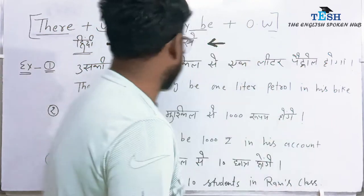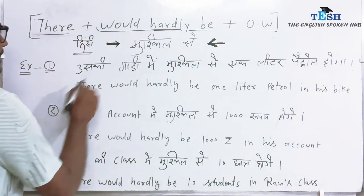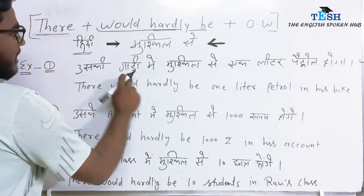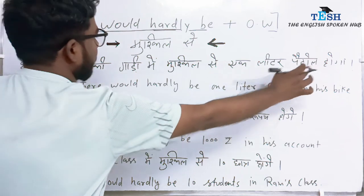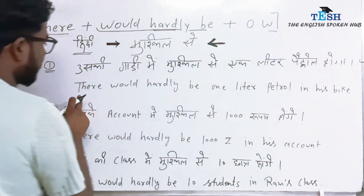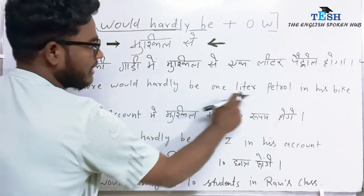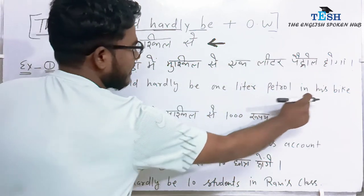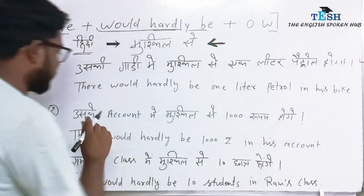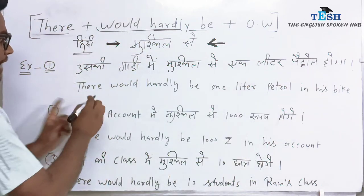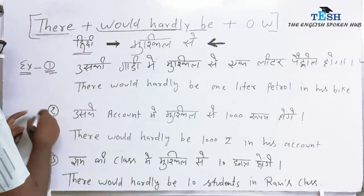So the first example: 'us ki gaadi mein muskil se ek liter petrol' becomes — 'There would hardly be one liter of petrol in his bike.' Okay, so just like you saw the first example, we will frame the other examples in the same way to build sentences according to your own context.